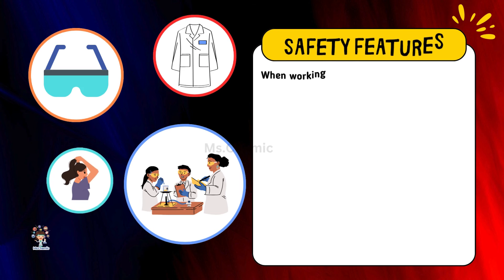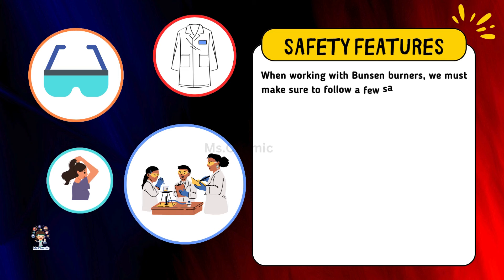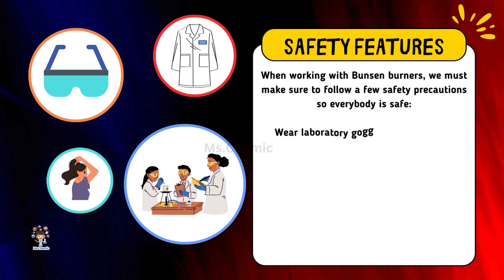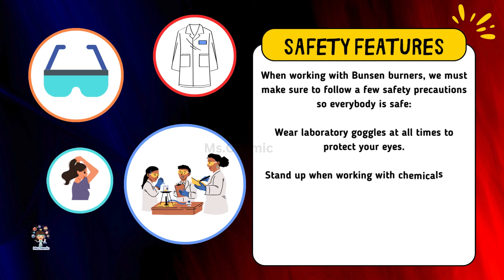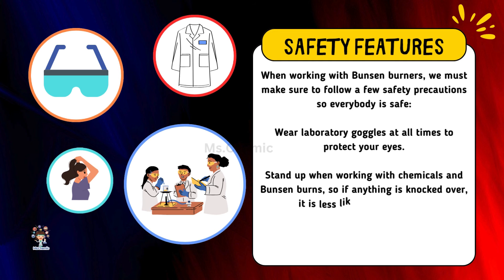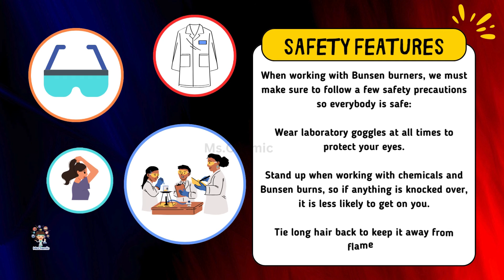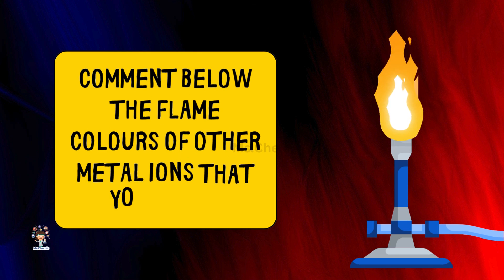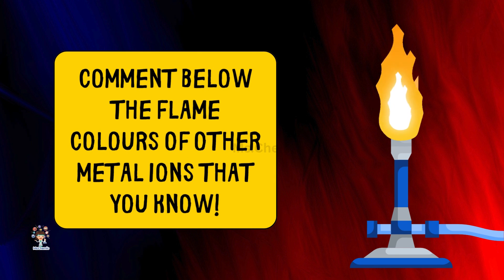Safety features when working with Bunsen burners: we must make sure to follow a few safety precautions so everybody is safe. Wear laboratory goggles at all times to protect your eyes. Stand up when working with chemicals and Bunsen burners, so if anything is knocked over it is less likely to get on you. Tie long hair back to keep it away from flames. Comment below the flame colors of other metal ions that you know.